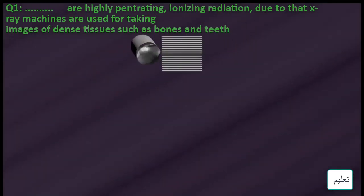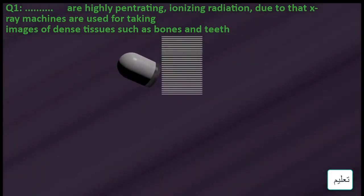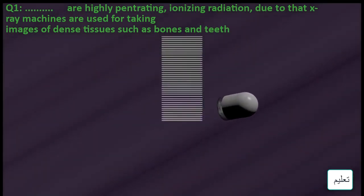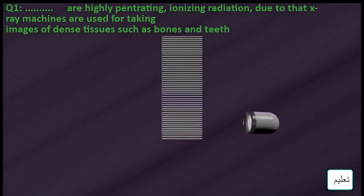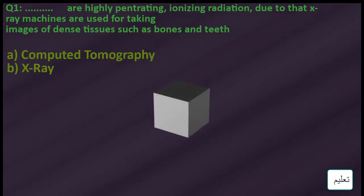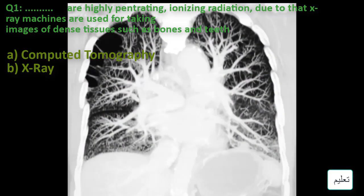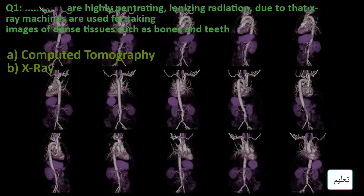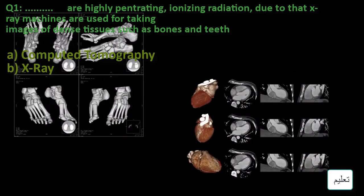A CT scan is an x-ray procedure that creates cross-sectional images with the help of computer processing. CT images are more detailed than conventional x-ray images and can reveal bones as well as soft tissue and organs.